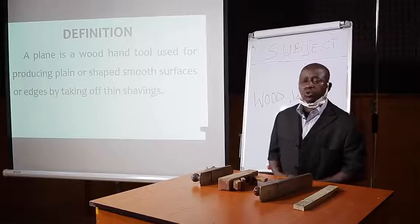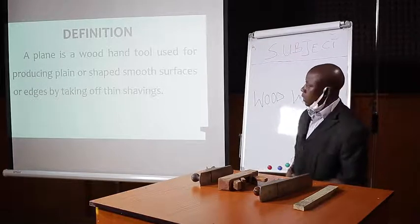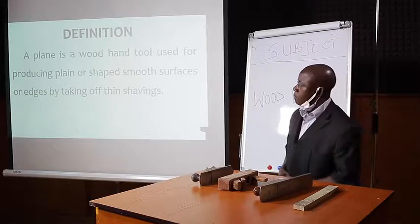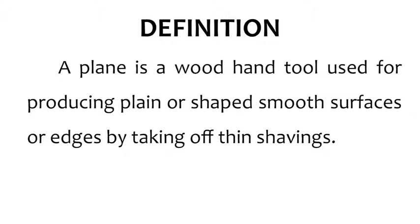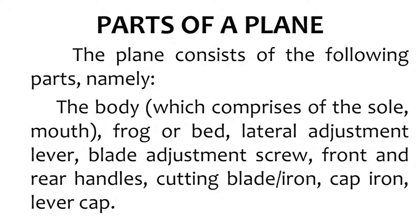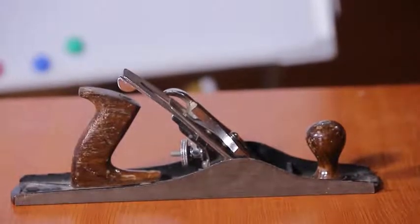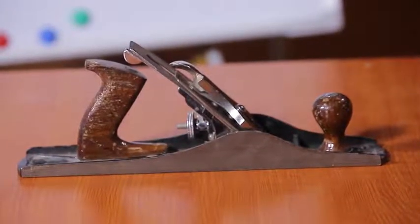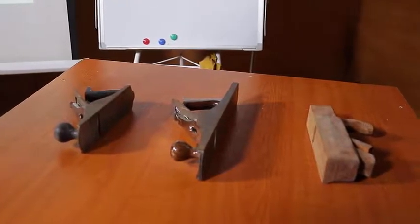Among the woodwork hand tools we use in the workshop, the plane serves an important role. A plane is a woodwork hand tool used for producing plain or shaped smooth surfaces or edges by taking off thin shavings. The plane consists of the following parts: the body, which comprises the sole and mouth; the frog or bird; the lateral adjustment lever; the blade adjustment screw; the front and rear handles; the cutting blade or cutting iron; and also the cap iron and the lever cap. Here is a plane assembled with all its parts.